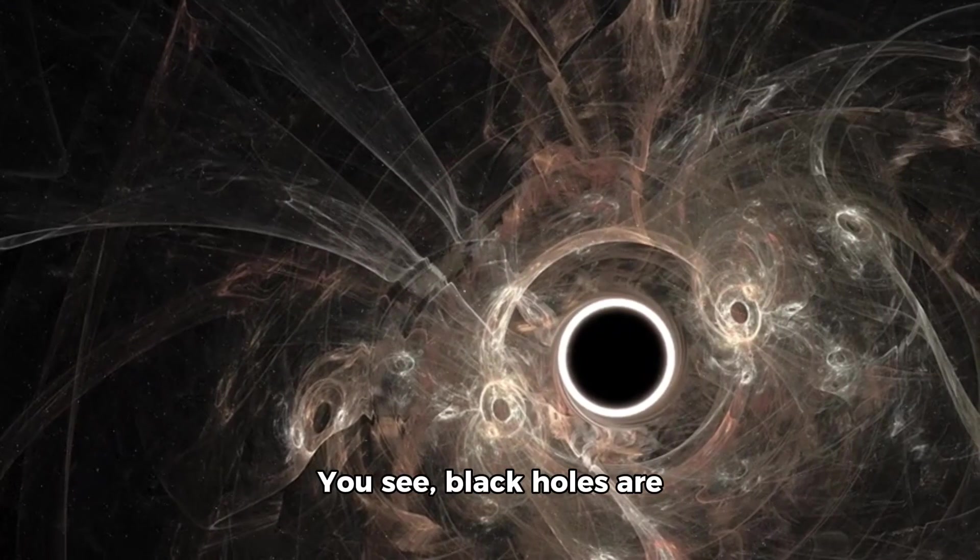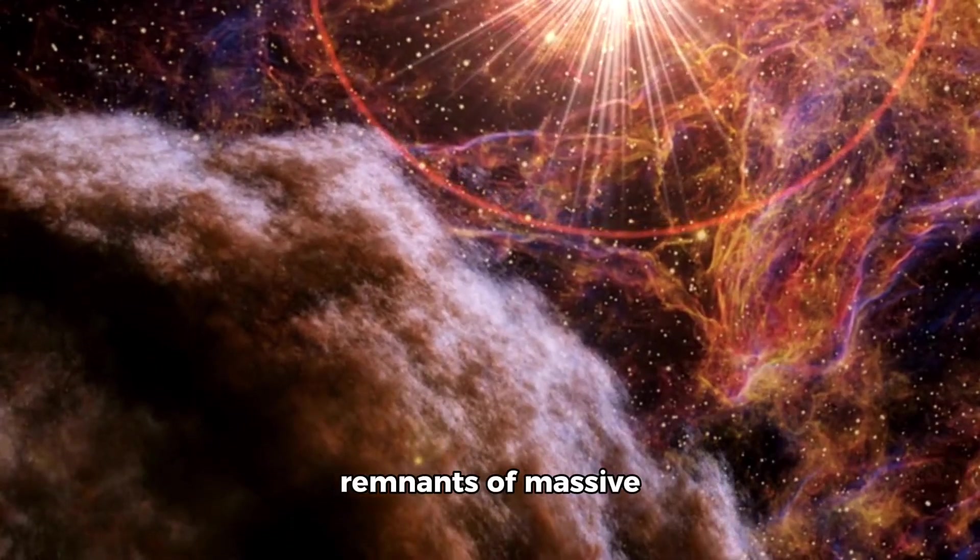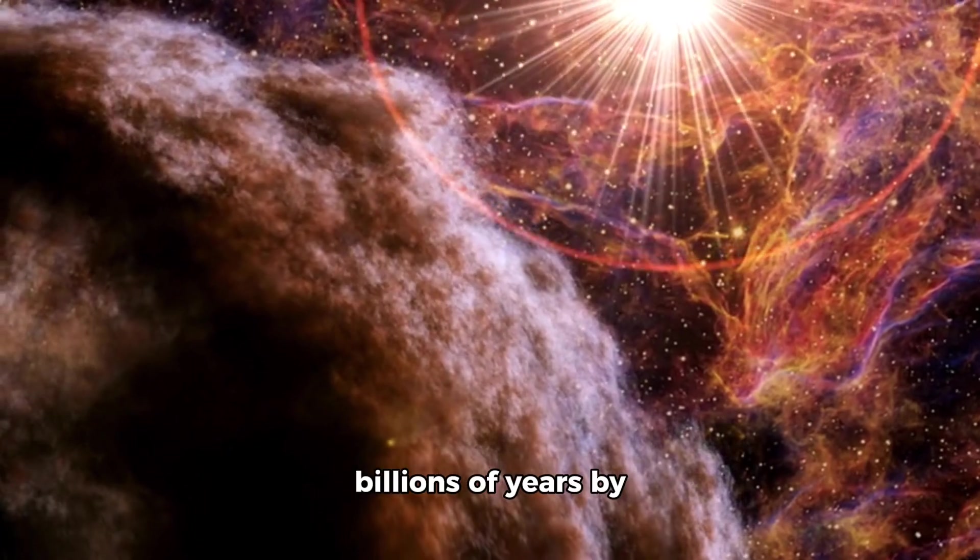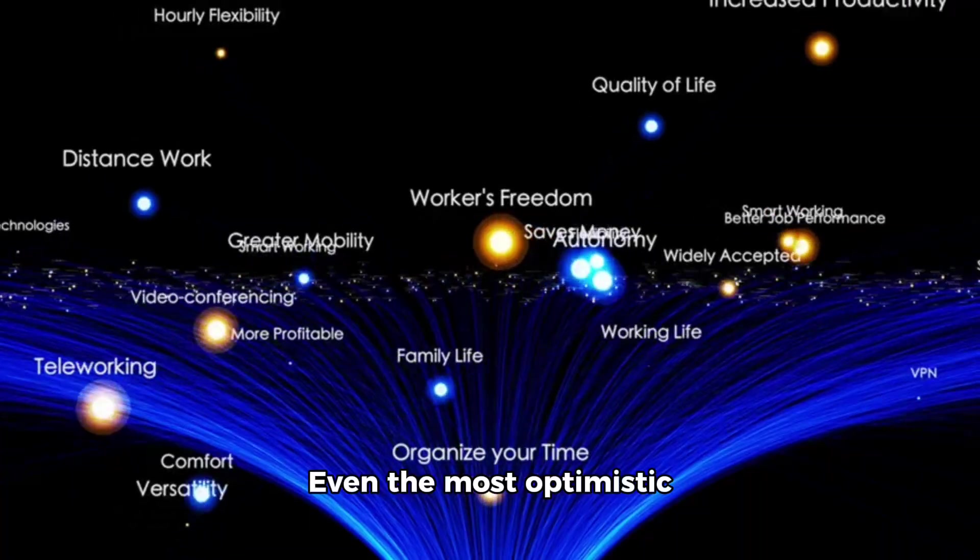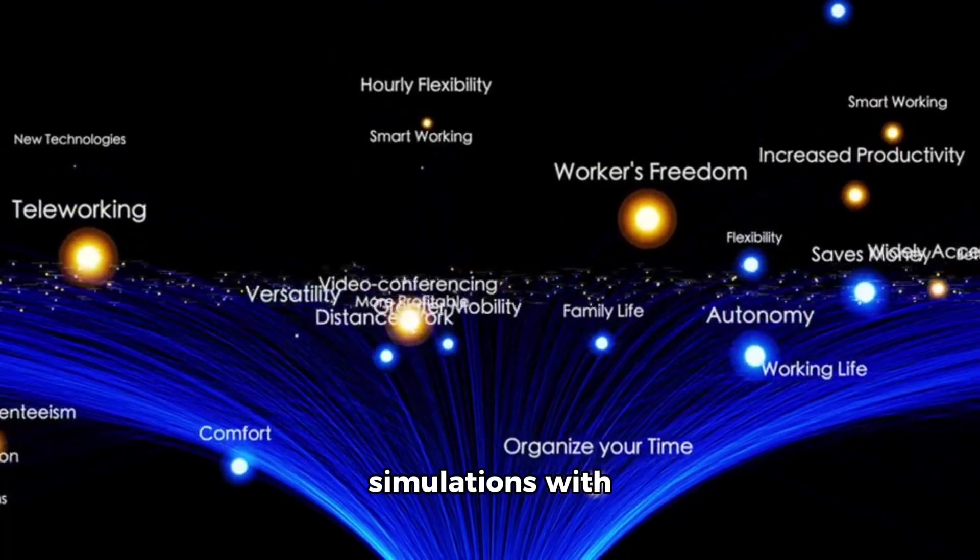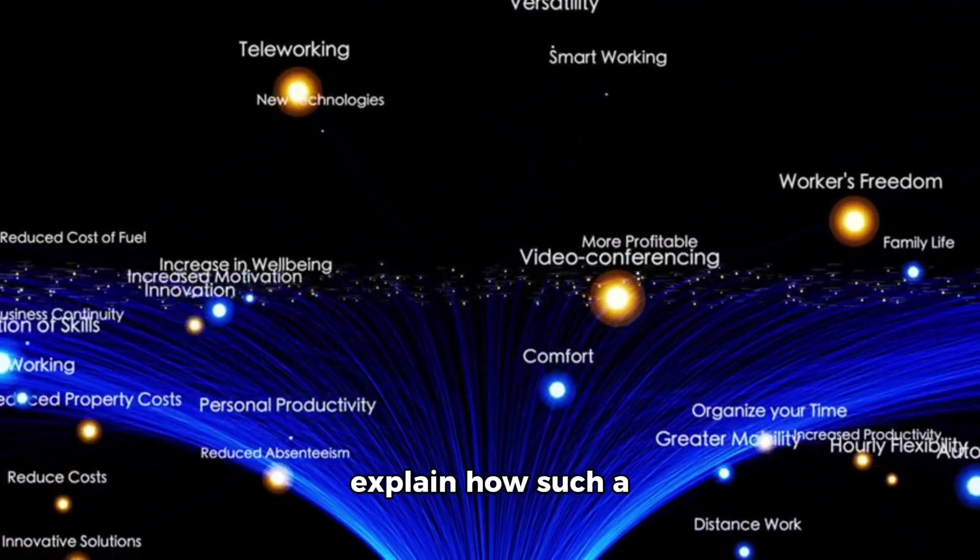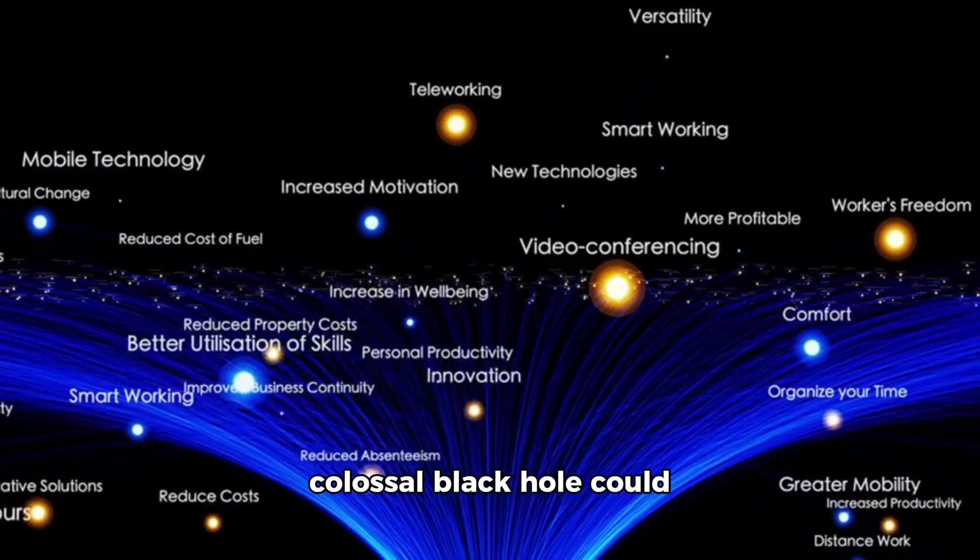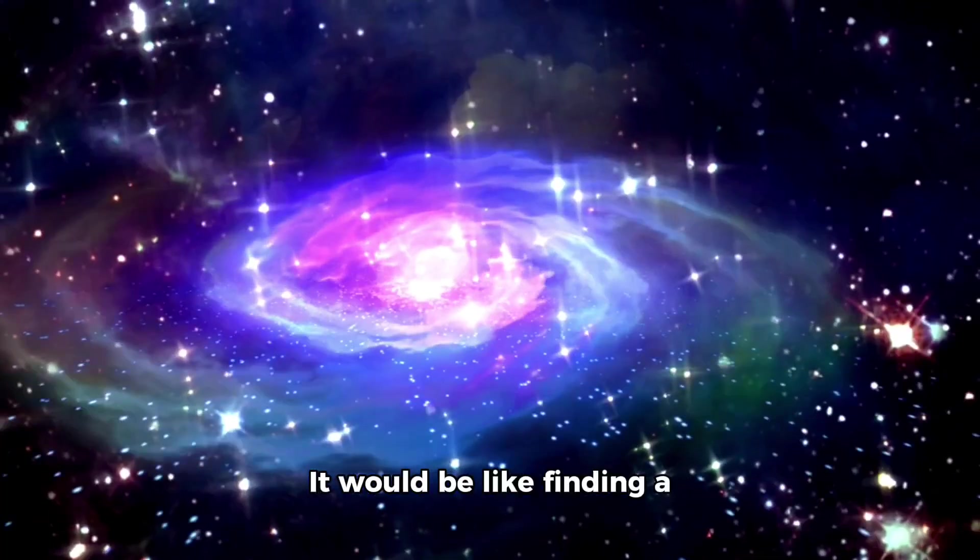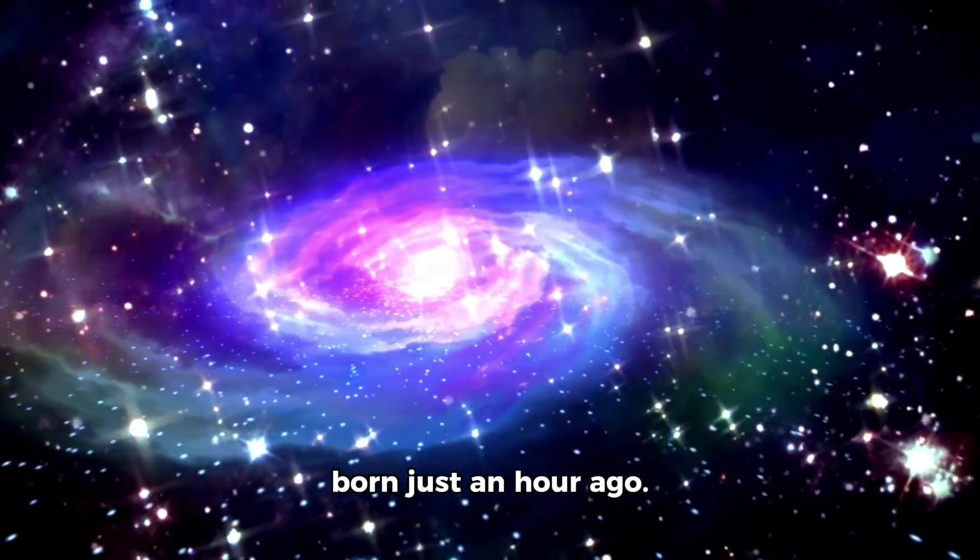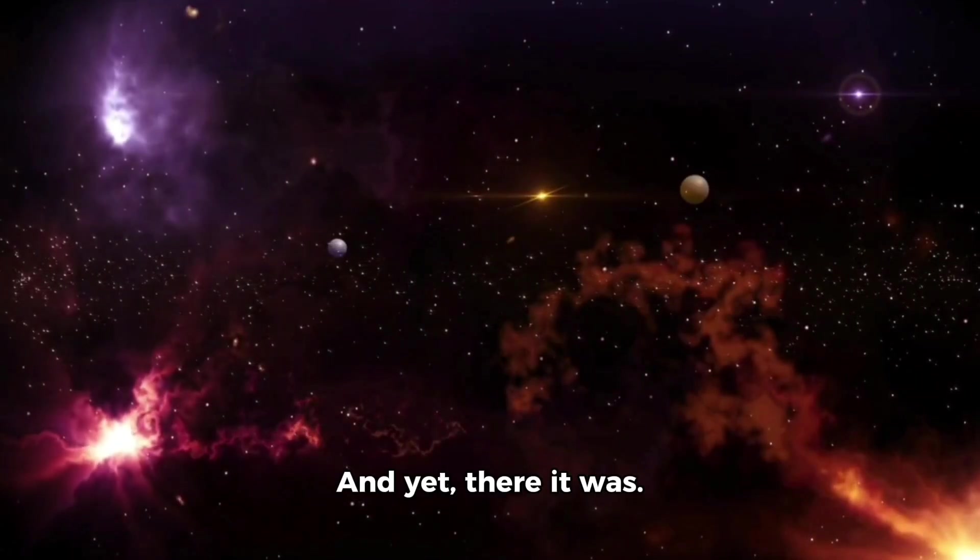You see, black holes are thought to grow gradually. They begin as the remnants of massive stars, then feed over billions of years by consuming gas, dust, and other stars. Even the most optimistic simulations with accelerated growth models and non-stop feeding can't explain how such a colossal black hole could form within 400 million years of the Big Bang. It would be like finding a fully grown adult who was born just an hour ago. The math doesn't work. And yet, there it was.